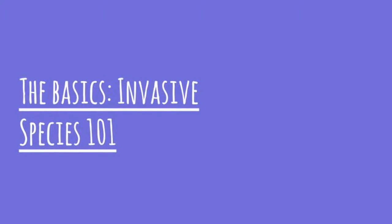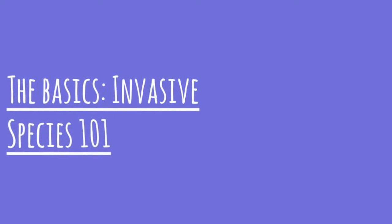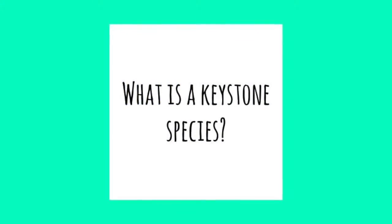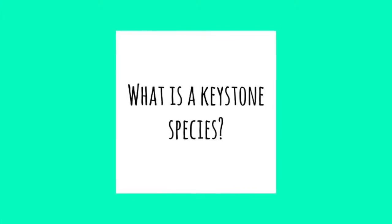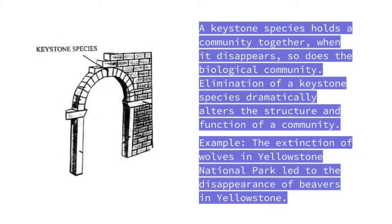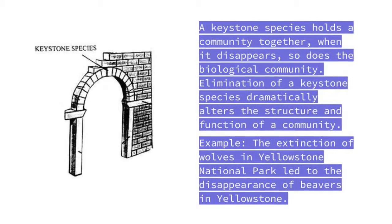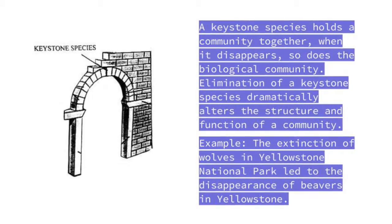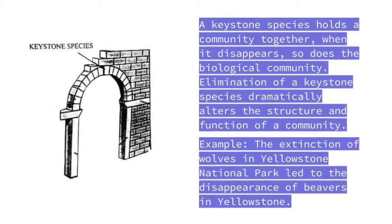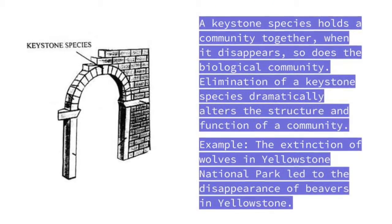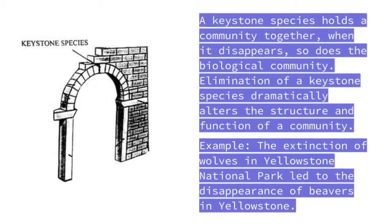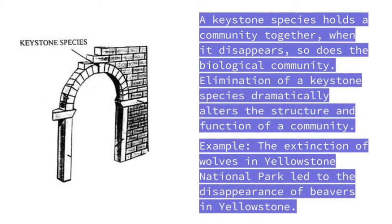The Basics: Invasive Species 101. What is a Keystone Species? A Keystone Species holds a community together. When it disappears, so does the biological community. Elimination of a Keystone Species dramatically alters the structure and function of a community.